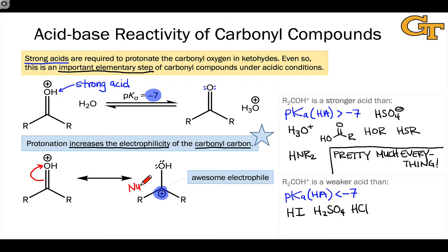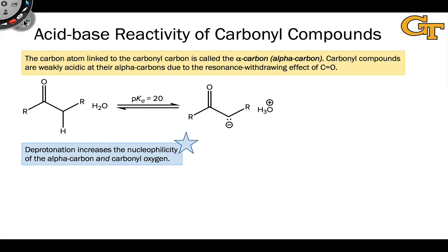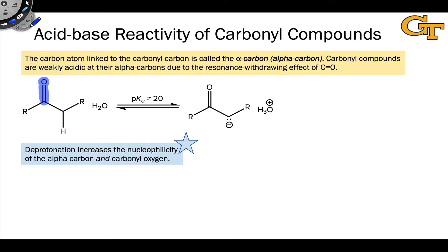Nucleophiles can associate to this carbonyl carbon, leading to addition reactions and related processes. Turning to acidity of the carbonyl group: there are no acidic hydrogens associated with the carbonyl group per se, but the carbonyl group is electron-withdrawing, and like all electron-withdrawing groups, it affects the acidity of hydrogens linked to atoms connected to the carbonyl group. If we name the carbons connected to the carbonyl group using Greek letters alpha, beta, gamma, etc., the carbonyl group acidifies hydrogens linked to what's called the alpha carbon.